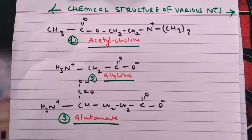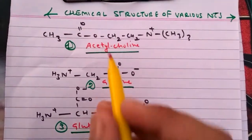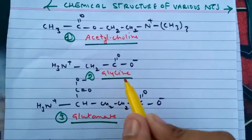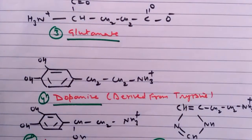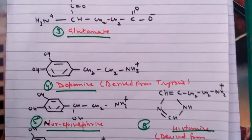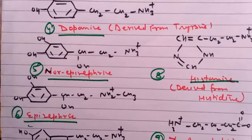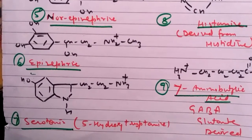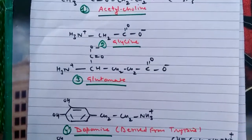Finally, the chemical structures of various neurotransmitters are shown: acetylcholine, glycine, glutamate, dopamine, norepinephrine, histamine, epinephrine, serotonin (5-hydroxytryptamine), and gamma-aminobutyric acid (GABA). These are the chemical formulas and structures of the commonly occurring and well-studied neurotransmitters.